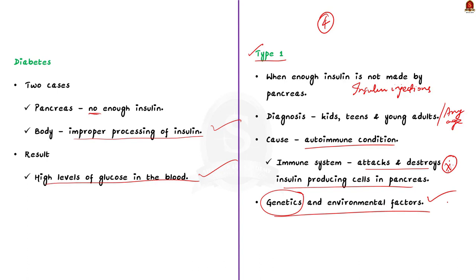A viral infection can also trigger type 1 diabetes. Note the point that it can happen at any age. So if a question comes in the prelims stating that type 1 diabetes happens only in young adults, the statement is wrong. It can happen at any time.